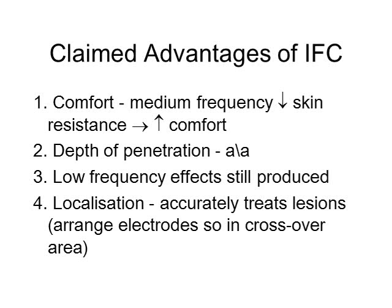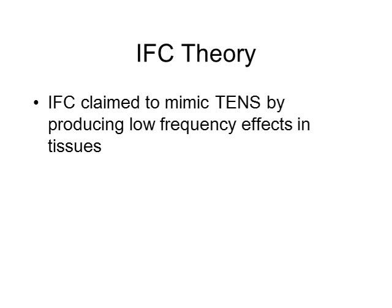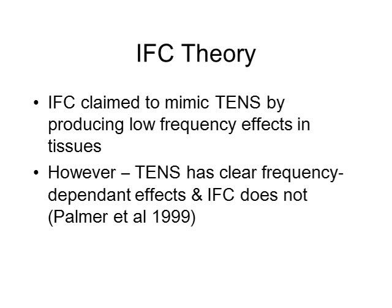Similar arguments are made for the depth of penetration with IFC, but have been similarly criticised. IFC has also been claimed to produce low frequency effects while using medium frequency. The crossover of the electrodes allows localisation of the lesion, although this may also be achieved by using four electrodes with TENS. Theoretically, the amplitude modulated frequency of interferential current is claimed to mimic TENS — i.e. a 5 Hz amplitude modulated frequency should have the same effects as 5 Hz TENS. Alteration of TENS frequency, however, changes the effects that it has on excitable tissues, whilst altering the amplitude modulated frequency of interferential current does not. Clearly, therefore, interferential current does not mimic TENS.